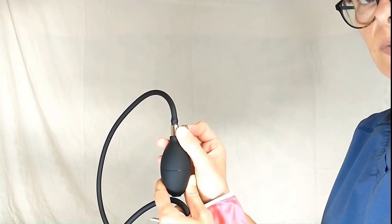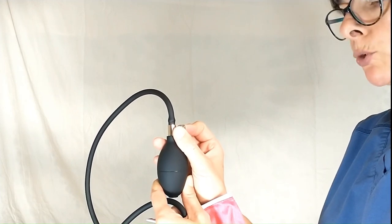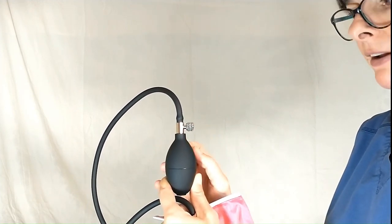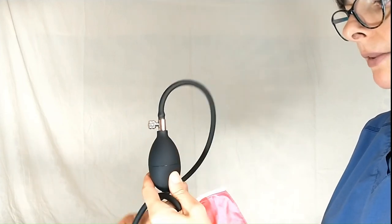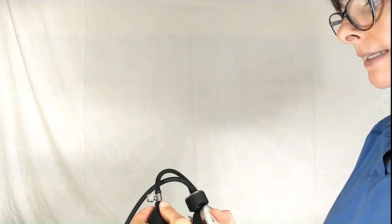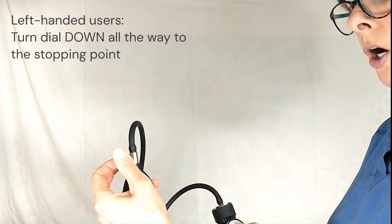And you really want to do this very slowly because if the dial releases too fast, you won't be able to see the actual reading. Now if you are left-handed, it helps to turn this bulb the other way and actually hold it with your left hand. Now in this case, you will need to turn it towards you to lock it.